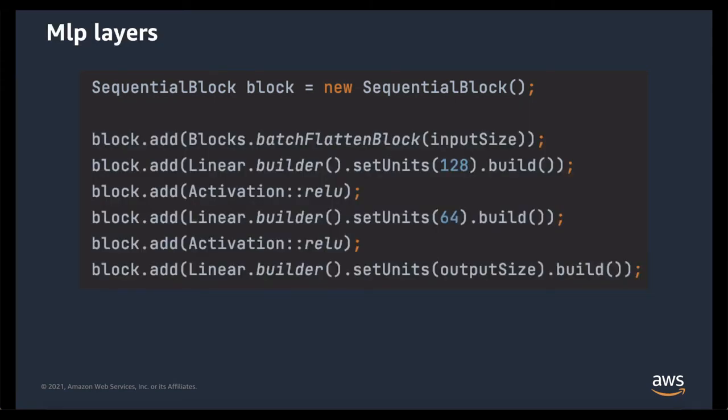Now it's time to add our layers. The first thing we need to add is a batch flatten block that flattens the input from a two-dimensional image into a single-dimensional feature vector. After that, we're going to add our first hidden layer, which has size 128 in its linear transformation, along with the corresponding activation function, and we chose the popular ReLU as our activation function.